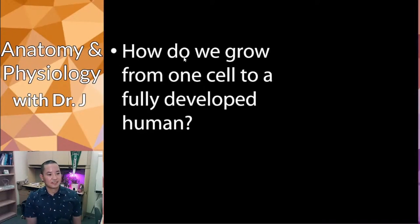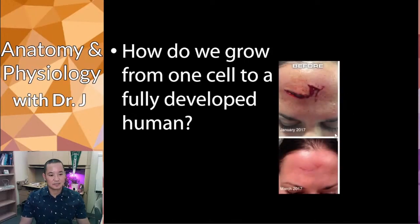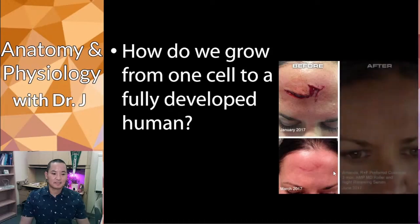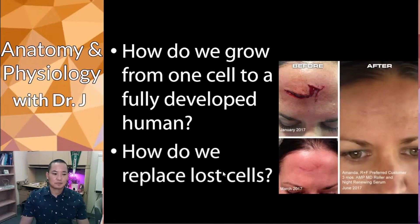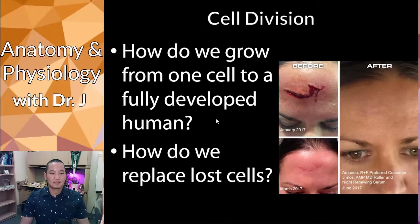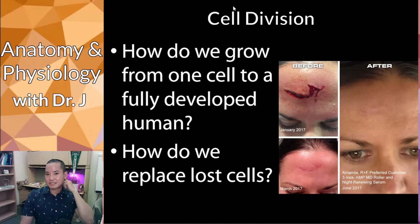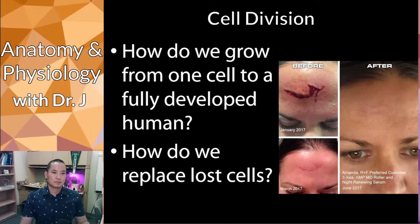And not only that, but how do we also replace lost cells? Look at this gnarly wound — notice that it healed up. So how do we replace lost cells? Are these two separate questions? Well, they are two separate questions, but they have a common answer: cell division. This is how you're able to make more cells in your body and also replace lost cells.